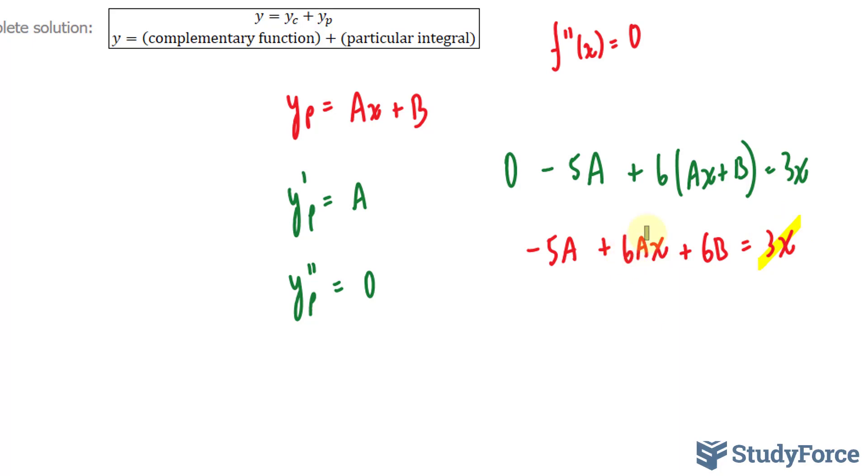3x and 6ax are like terms, so we'll only focus on those two terms, where I have 6ax equals 3x. The x's cancel out, dividing both sides by x. And if I divide both sides by 6, I'll end up with a equals half.